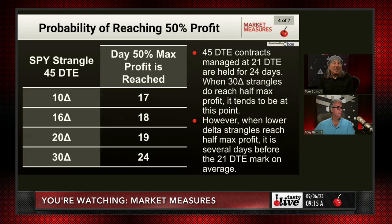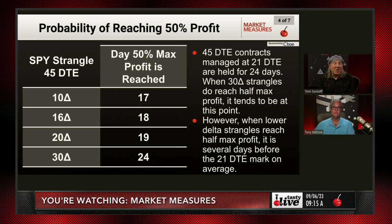That just means to set your expectations fairly. So if you're selling 30 or 35 delta strangles, you're not going to get to 50% of max profit that quickly. But if you're selling 10, 15, or 20 delta strangles, you're going to get there in that 50% range, assuming all things work.